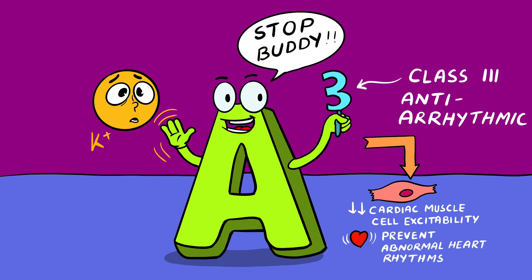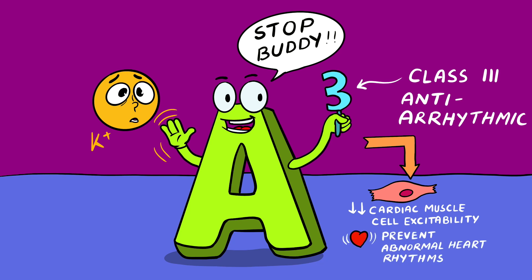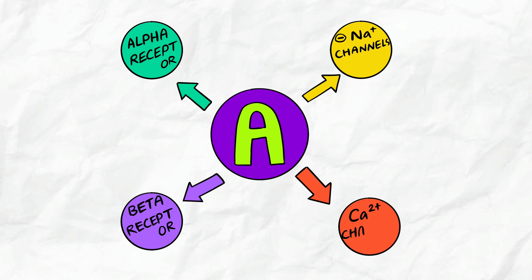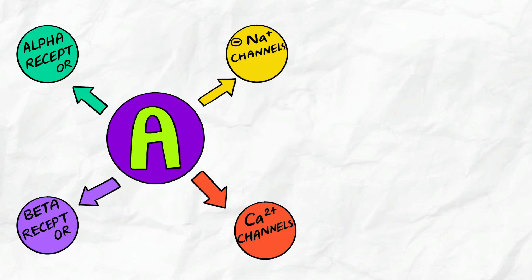Importantly, amiodarone also blocks inactivated sodium channels, beta receptors, alpha receptors, and calcium channels.